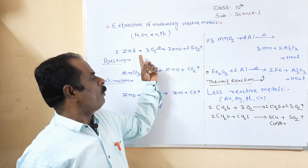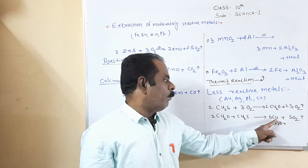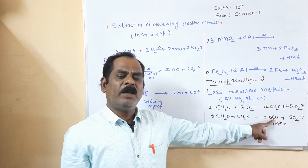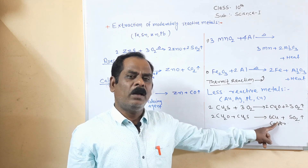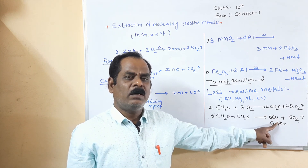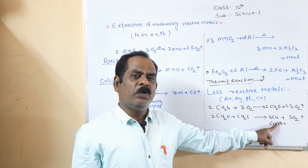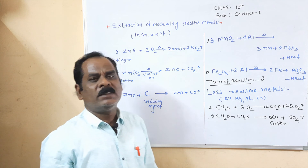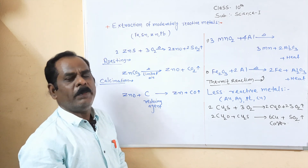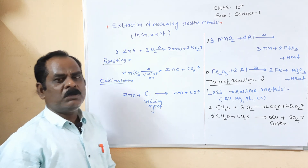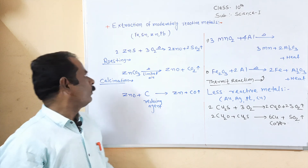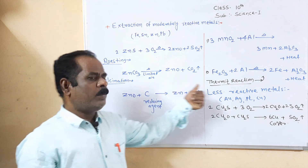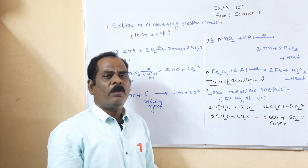In both the less reactive and moderately reactive metal extraction processes, we initially get the metal in a molten and impure form. From this impure metal we can easily extract pure metal. The process of extracting pure metal from its impure state is called refining of metals. In the examination, questions may be asked to define roasting, calcination, thermite reaction, or refining of metals.